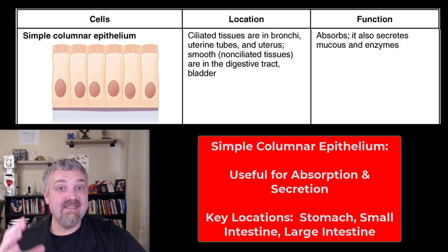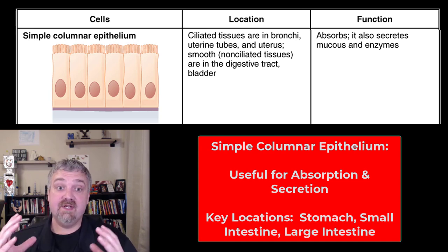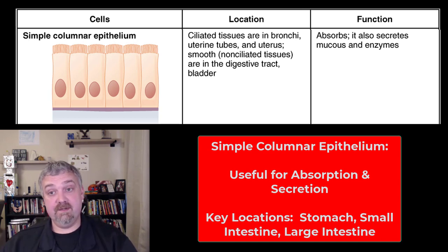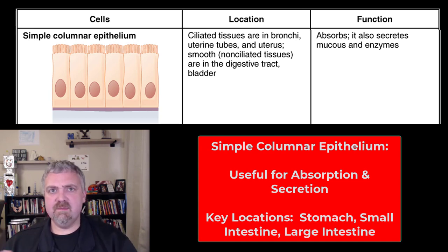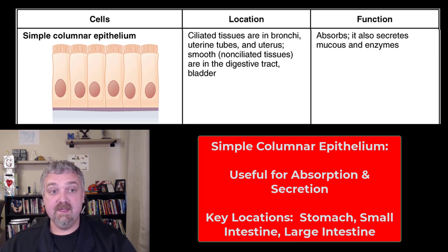First we're going to see simple columnar epithelium — a single layer of these column-shaped cells. Some of these are going to be very important; there's going to be a little bit of protective nature just because they're so thick, but remember that simple, you always think absorption and secretion.